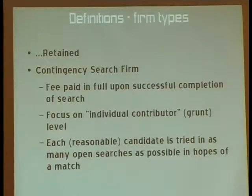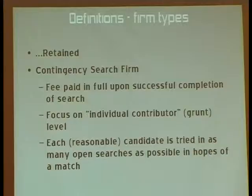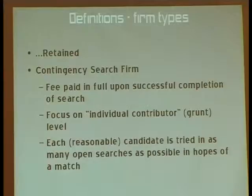In contrast, a contingency search firm only gets paid at the end of the search, so the longer a search takes, the longer it is before they get their next check. Therefore, they concentrate on searches that can be completed faster, focusing more on the individual contributor level. They also have different tactics: every time they find a reasonable candidate, they won't send that resume to just one client — they'll send it to every client they have at the moment and hope for a match as soon as possible. I should mention I spent five years as a software developer for a retained executive search firm, so most of my slides are oriented toward that type. There are very few companies that do both kinds of searches — they usually stick to one or the other.